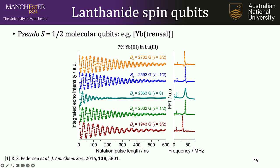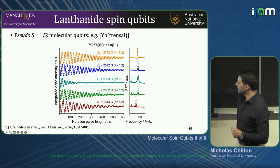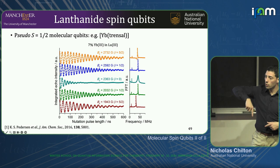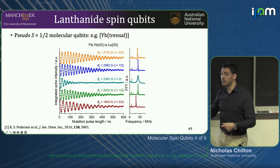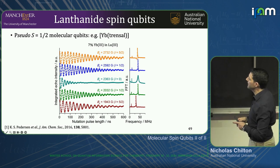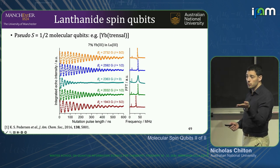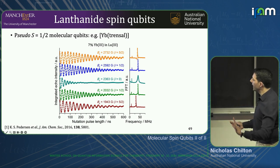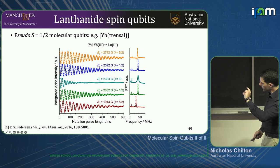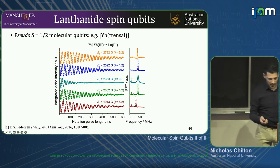This is looking at nutation experiments or Rabi oscillations on this sample in the solid state — 7% ytterbium diluted into lutetium. Here we're looking at different MI transitions. The EPR selection rule is changing delta MJ by ±1, which is an allowed EPR transition in the ground electronic doublet. We can do that on different lines of fixed MI — the projection of the nuclear spin does not change when you do an EPR transition. These oscillations at different magnetic fields address different nuclear spin projections, and you can see they're all coherent.